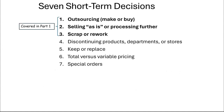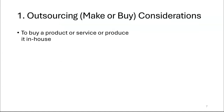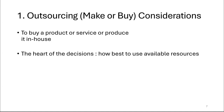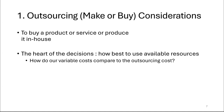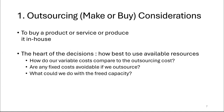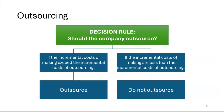There are seven short-term decision tools we can use. In this part, we'll cover the first three: should you make it or buy it, should you sell it as is or process further, and should you scrap or rework? For make or buy — to buy a product or service or produce it in-house — the heart of the decision is how best to use your resources. How do variable costs compare to outsourcing costs? Are any fixed costs avoidable? If the incremental cost of making exceeds the incremental cost of outsourcing, then we outsource. If the incremental cost of making is less, we do not outsource.